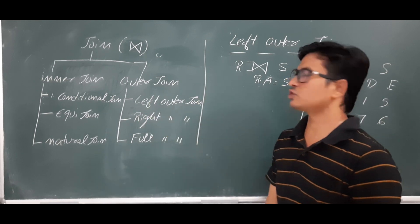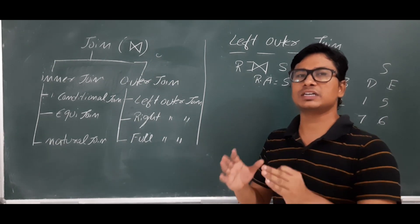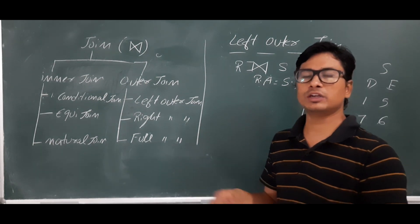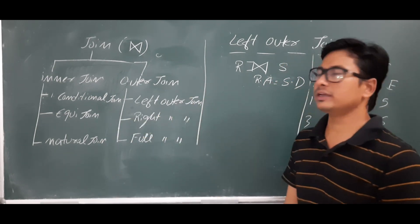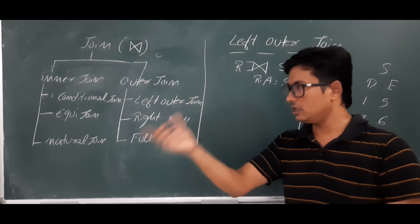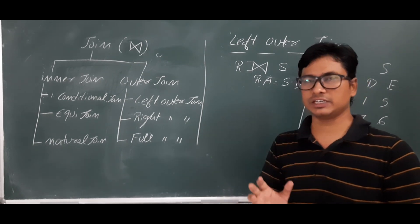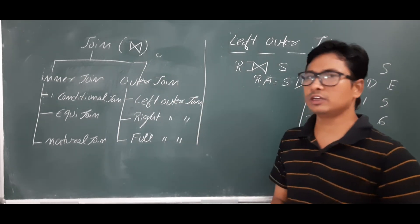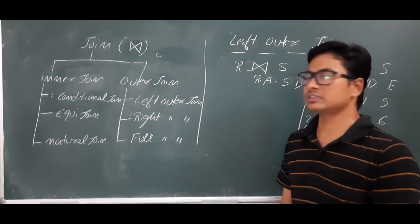In the inner join, when it comes to a natural join or equi join, only the tuples which are satisfying the condition will come as output. In some cases we even got zero tuples when applying the condition. In the outer join, the tuples satisfying the condition will come, and the tuples which are not satisfying the condition will also come. That is the basic difference between inner join and outer join.